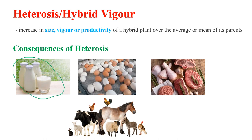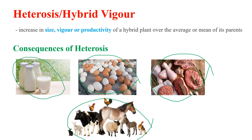Increased milk production by cattle, increased egg production by poultry, superior quality meat, and increased growth rate in domestic animals are some of the effects of hybrid vigour in animal breeding.